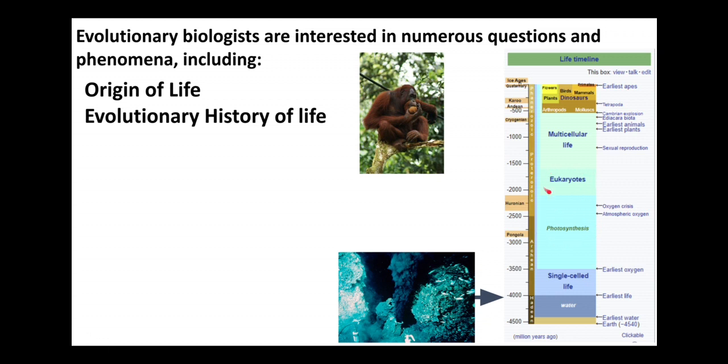And then how did all of the diversity, all the many types of animals, multicellular complex animals we have and multicellular complex plants and other organisms, evolve over time? So what is the broad evolutionary history of life?